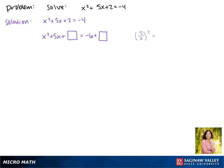This gives us 25 over 4, so adding 25 fourths to both sides.